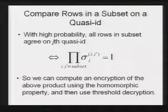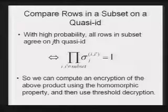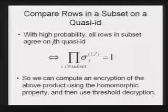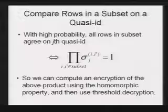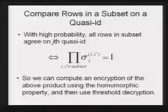Otherwise, there will be at least one uniformly random value. So there will be some uniformly random values times some 1s, so the result is still a uniformly random value, and with high probability it won't be equal to 1.